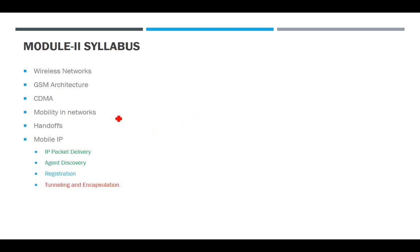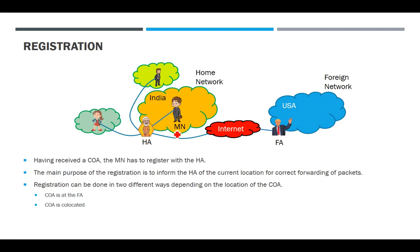This is the syllabus of our module 2 and we are discussing Mobile IP. In lecture 3 we discussed IP packet delivery, in lecture 4 we discussed agent discovery, and this lecture is on the registration process. Before explaining the registration process, let us first recall the agent discovery process.